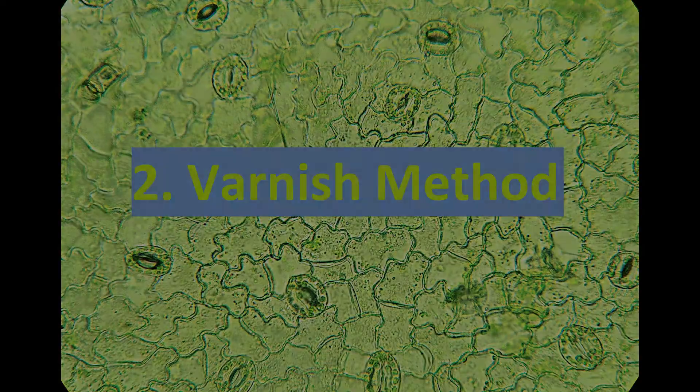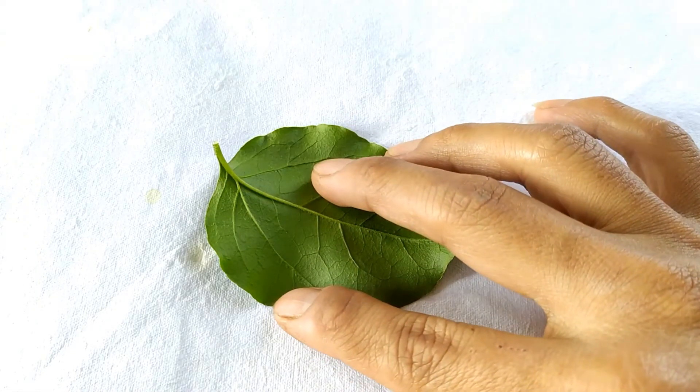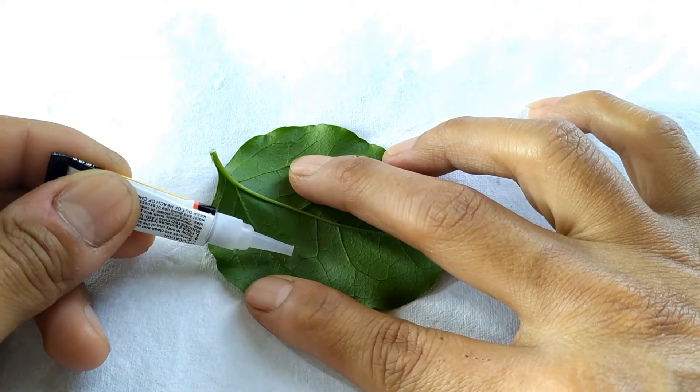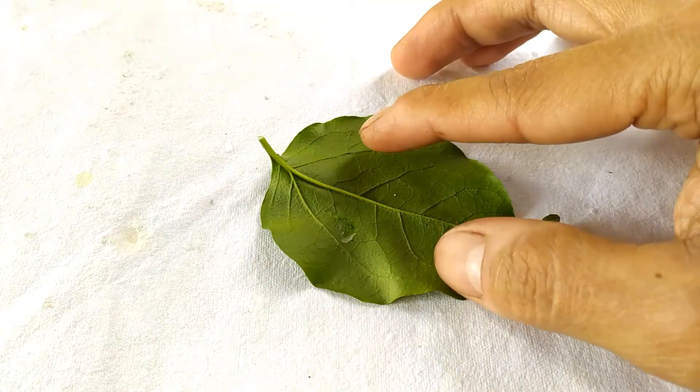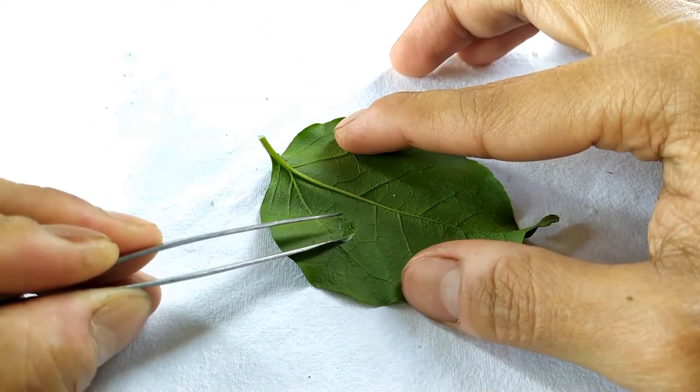Cover the leaf peel with a cover slip and observe under the microscope. For the varnish method, take a fresh leaf and apply a small amount of superglue or nail varnish on the lower surface of the leaf. Once the glue has sufficiently dried, gently pull it off the leaf using a tweezer.